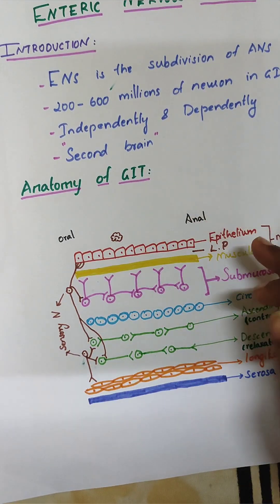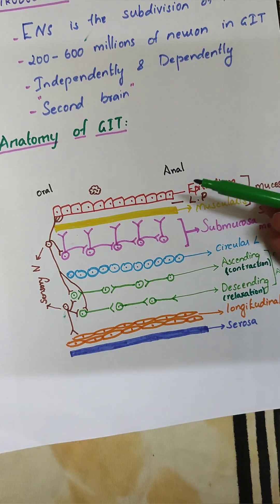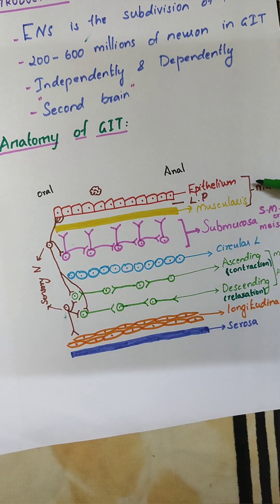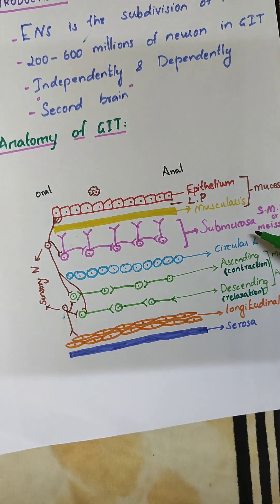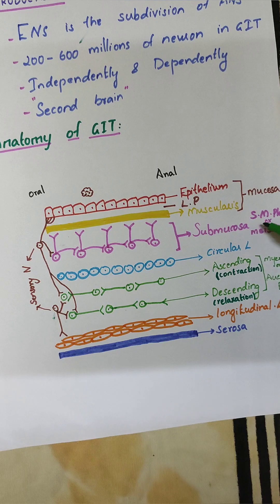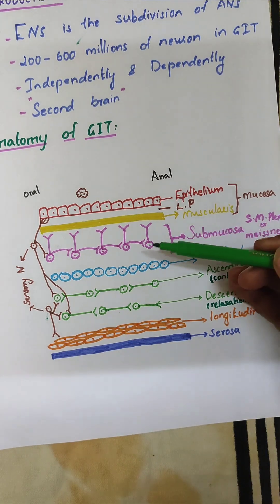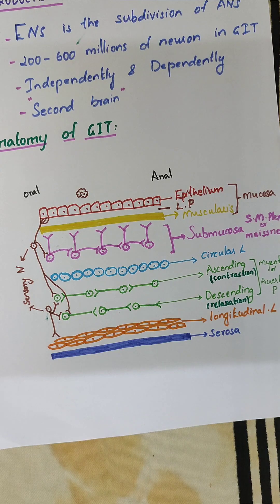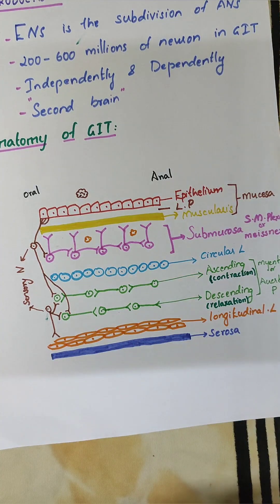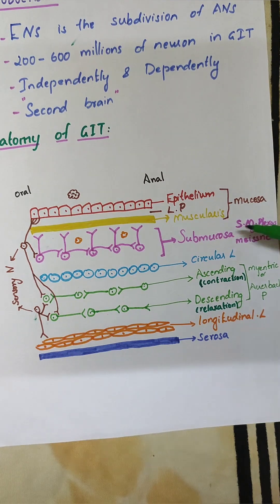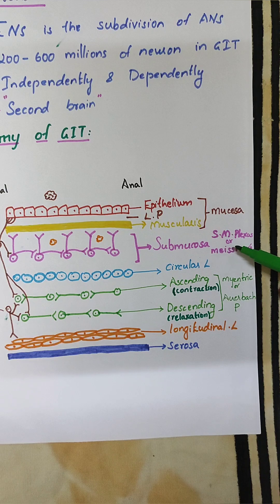Next comes the anatomy of the GIT. The innermost part of the GIT is the mucosa. The mucosa is divided into three layers: the epithelium, lamina propria, and muscularis. Next comes the submucosa. The submucosa consists of glands and submucosal glands, and also a plexus known as the submucosal plexus or Meissner's plexus.